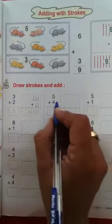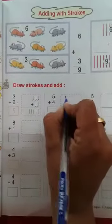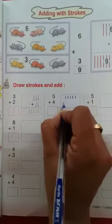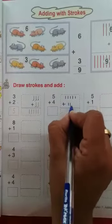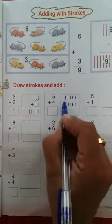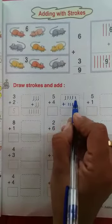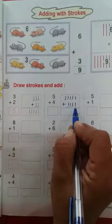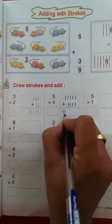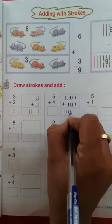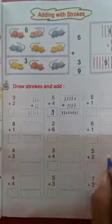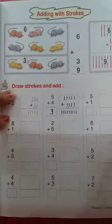Ab hum yahan pe jaise 5 plus 4 hai. To 1, 2, 3, 4 and 5. Thik hai? Then kitne hai? 4. 1, 2, 3, 4. To hum kitne altogether lines ho gayi? 1, 2, 3, 4, 5, 6, 7, 8 and 9. Kitni lines 9 draw karengi? 1, 2, 3, 4, 5, 6, 7, 8 and 9. To kitna aayega? 9. Thik hai? 9 lines draw gaye.